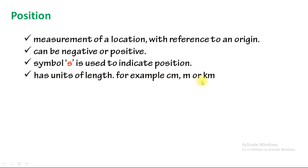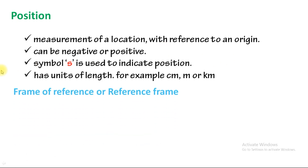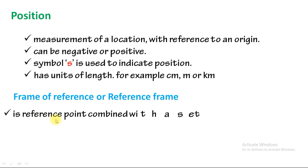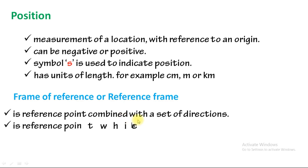Position has units of length such as centimetre, meter, and kilometre. Position is the measurement of a location. The reference frame — also called the frame of reference — is the reference point combined with a set of directions. It is related to the object's origin.